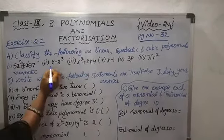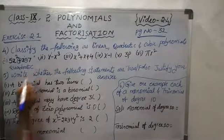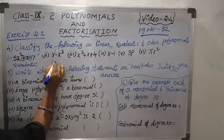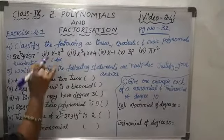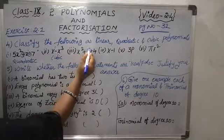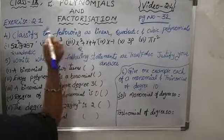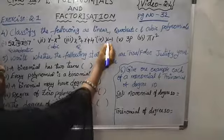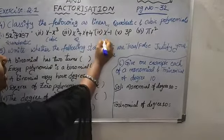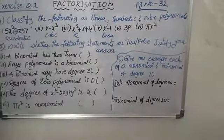For the next expression, the degree of one term is 1 and another is 3 — highest is 3, so it is a cubic polynomial. The next one has degrees 2, 1, and 0 — highest is 2, so it is also quadratic. For x minus 1, the degree is 1, so it is a linear polynomial. Find the remaining two yourself.